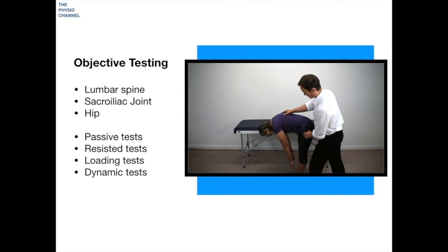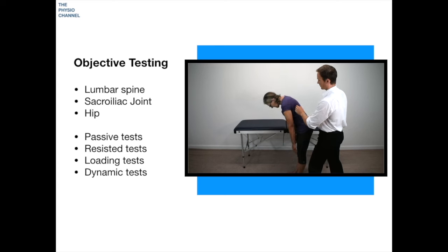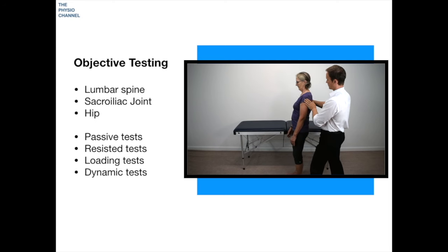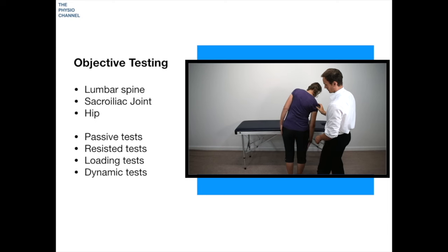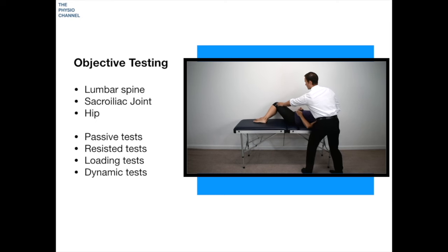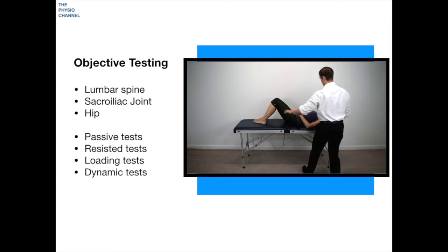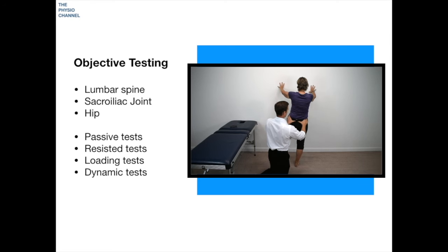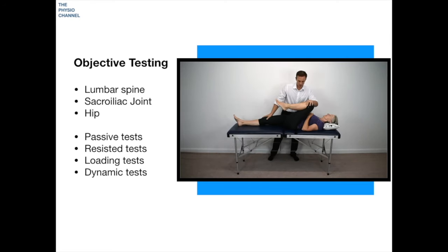For objective testing, I usually start with simple active testing of the lumbar spine — flexion, extension, and side flexion movements. From a supine position I then assess spinal rotation before turning the patient over to palpate around the back of the pelvis and lumbar spine. Assessment of the pelvis and sacroiliac joint follows, performing the stork test and then the Laslett cluster for SIJ provocation testing.